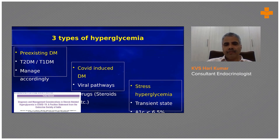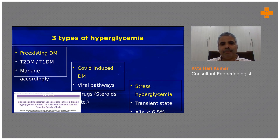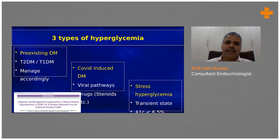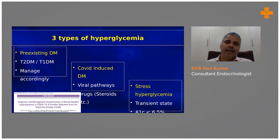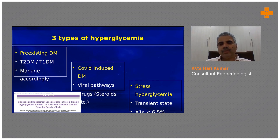What are the types of hyperglycemia? The first is what is known as pre-existing diabetes — somebody who has diabetes and then develops COVID. Diabetes can be either type 2 or type 1, and you need to understand that this gets aggravated because of COVID.